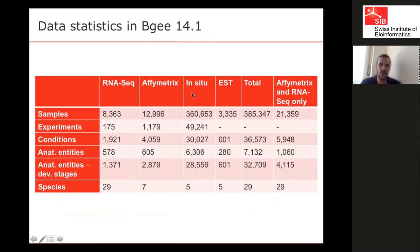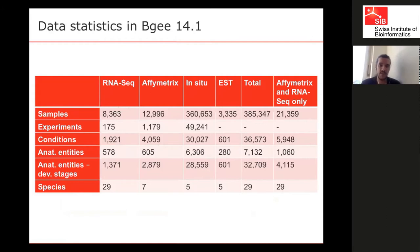You get different data types in BG: RNA-seq, Affymetrix, in situ, and EST. We have number of samples, number of experiments, and the number of conditions annotated. For RNA-seq data, we have about 600 different organs sampled, but for in situ hybridization data, we have 6,000, because it can get to cell-level resolution. This is why we value this kind of data — it's low throughput but very fine and detailed.